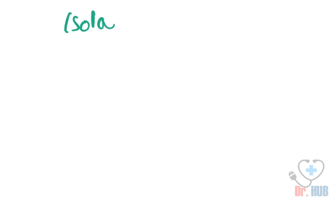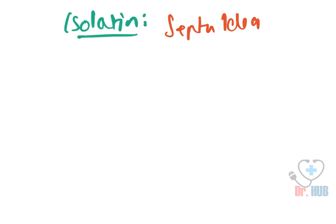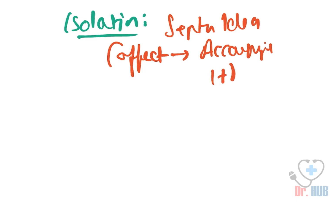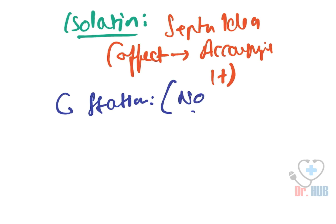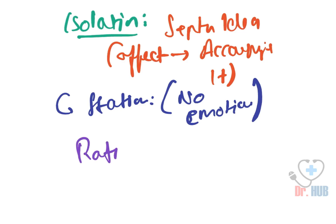Next is isolation. Isolation is the separation of an idea from the affect that accompanies it. An example is arriving at the station to identify a body and appearing to show no emotion. This is nothing but isolation.